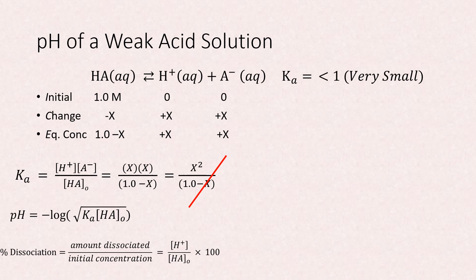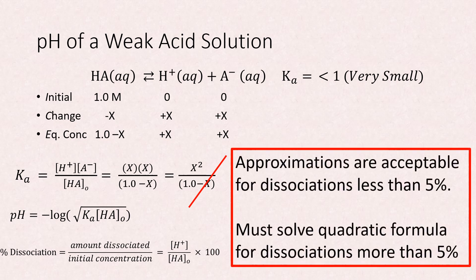To solve for percent dissociation, take the concentration of H plus at equilibrium, and divide by the original concentration of the weak acid, and multiply this value by 100. Approximations are generally acceptable for dissociations less than 5 percent. But you must solve the quadratic formula for dissociations more than 5 percent.